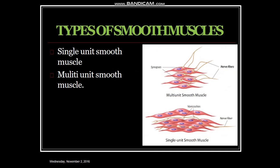Looking here, types of smooth muscle — basically smooth muscles are of two types: single unit smooth muscle and multi-unit smooth muscle. This is the histologic classification of the smooth muscle.